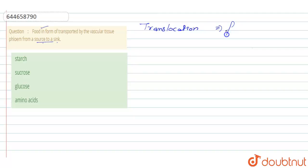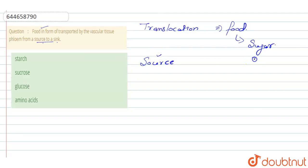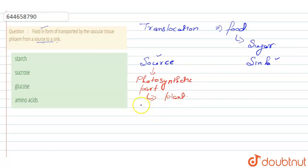When we talk about the translocation of food in plants, we know that food in plants is sugar. This process occurs from the source — translocation takes place from the source to the sink. The source is the photosynthetic part of the plant, which is the leaf, where photosynthesis takes place, and this leaf by the process of photosynthesis forms the sugar.